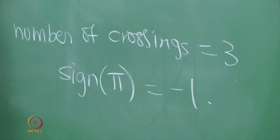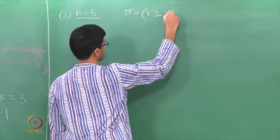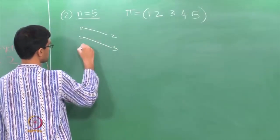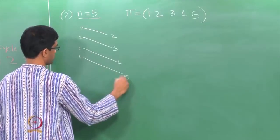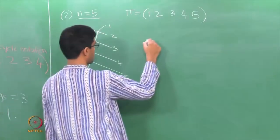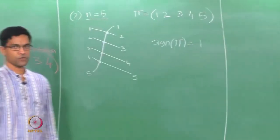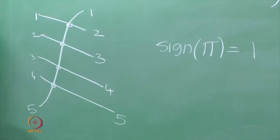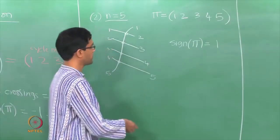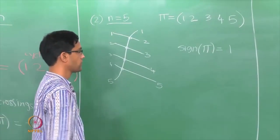Similarly, if you draw the diagram for the 5-cycle (1, 3, 4, 5) with 1 going to 3, to 4, to 5, back to 1, the number of crossings is 4 — an even number, so it is an even permutation. This reveals the general pattern: a cycle of even length has sign minus 1, while a cycle of odd length has an even number of crossings and is therefore an even permutation.